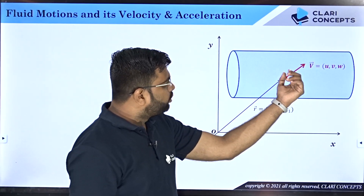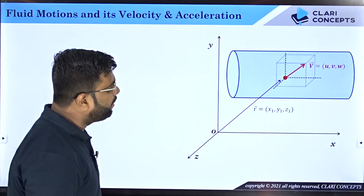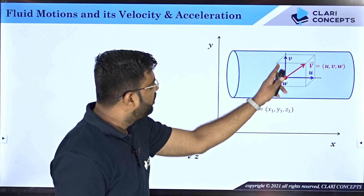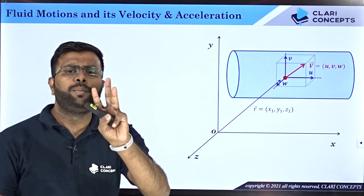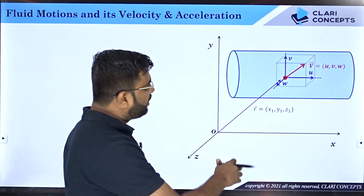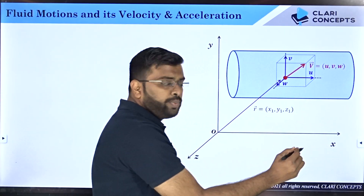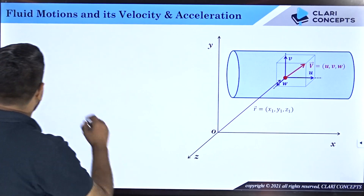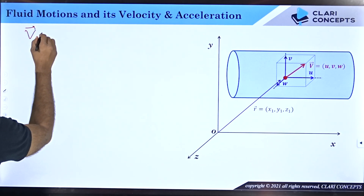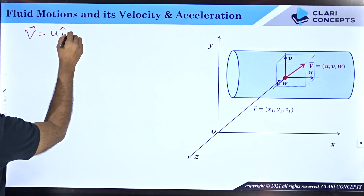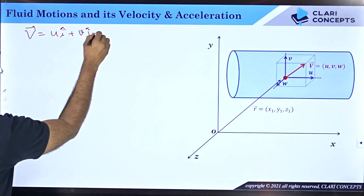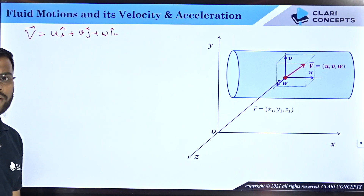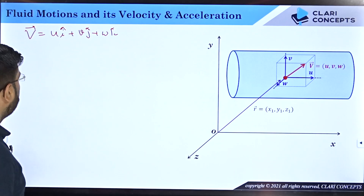When you resolve the velocity vector you get three mutually perpendicular components: u along x, v along y, and w along z. To represent velocity completely you must specify all three components. So velocity can be represented as V = ui + vj + wk, where i, j, and k are the unit vectors along the x, y, and z directions.